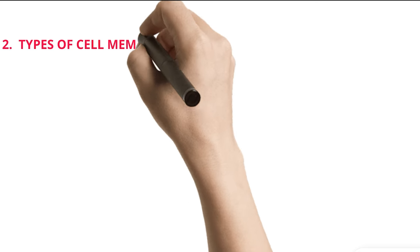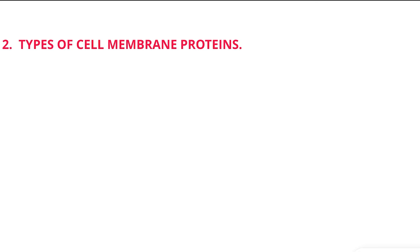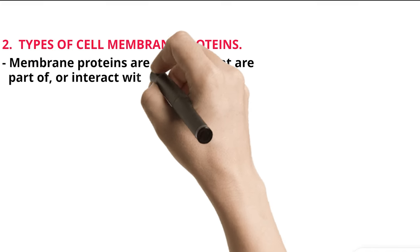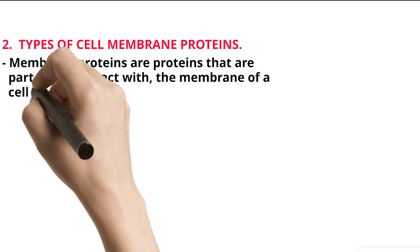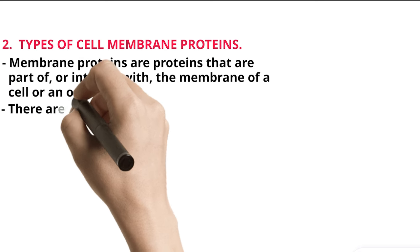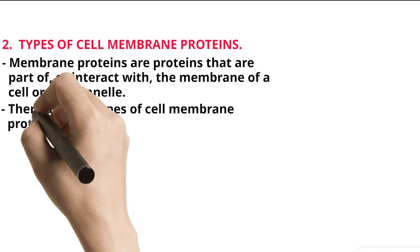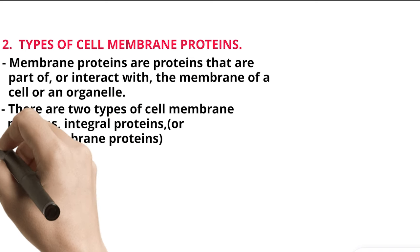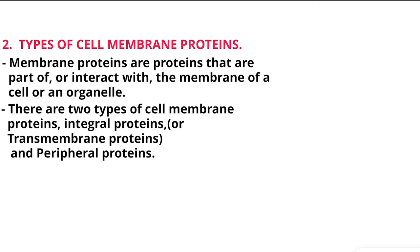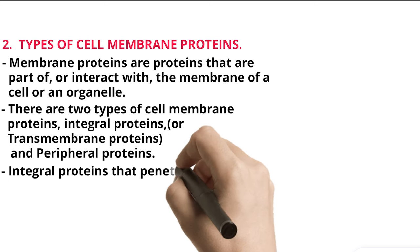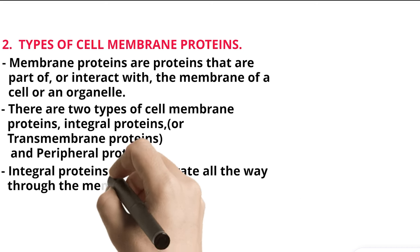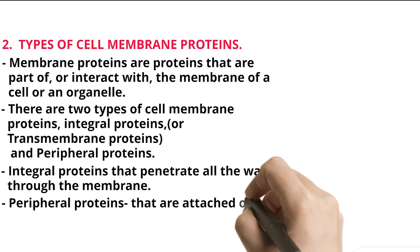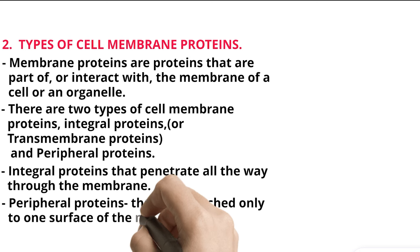2. Types of Cell Membrane Proteins. Membrane proteins are proteins that are part of or interact with the membrane of a cell or an organelle. There are two types of cell membrane proteins: integral proteins or transmembrane proteins, and peripheral proteins. Integral proteins that penetrate all the way through the membrane. Peripheral proteins that are attached only to one surface of the membrane.